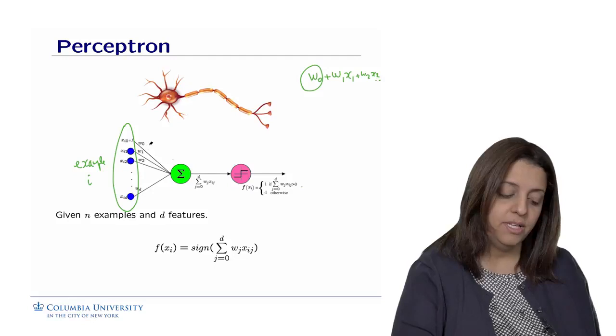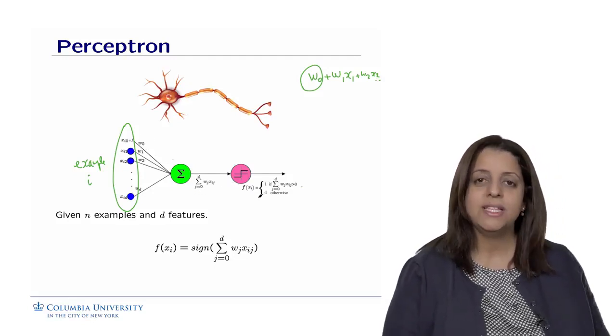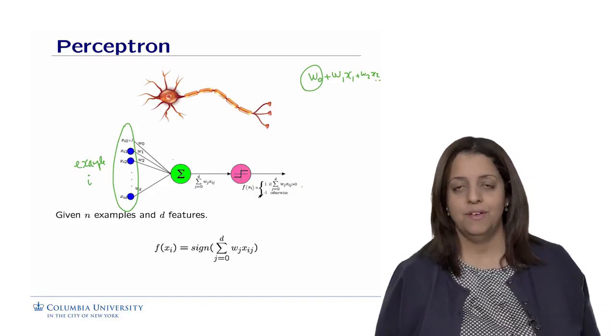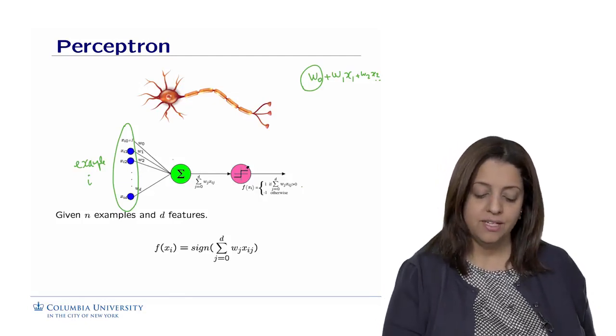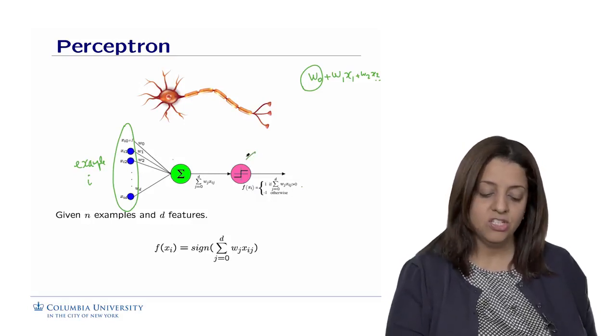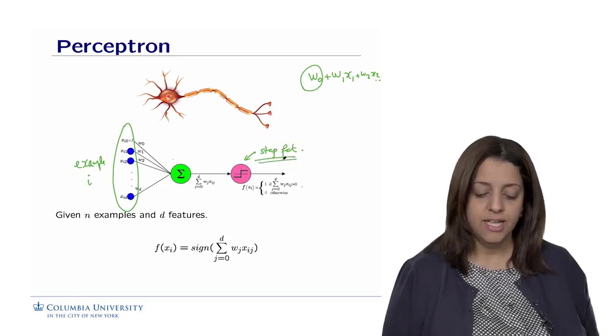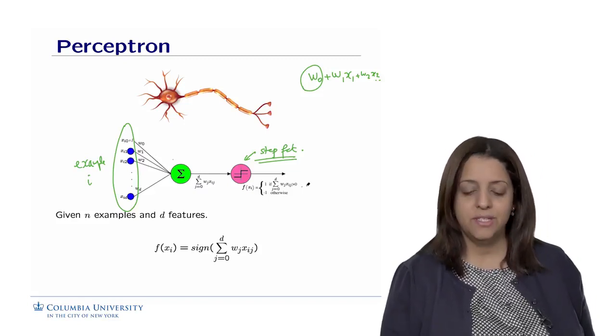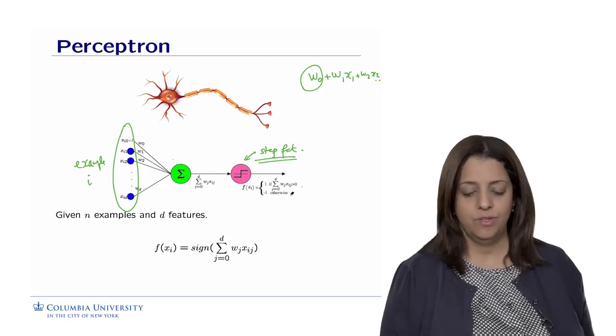For all the dimensions j for the feature i, we are going to do the weighted sum of the values. So these weights have to be learned. We don't know them a priori. This weighted sum is then plugged into some squashing function that will tell us whether the output or the label of the example i is either plus 1 or minus 1. We're going to use different kinds of squashing functions. One of them is called the step function, or threshold function.